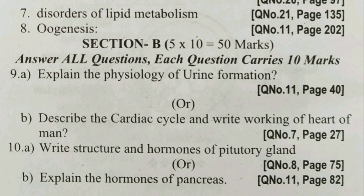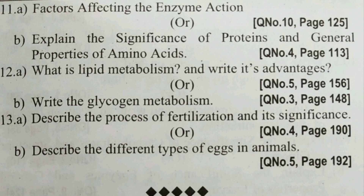Coming to Model Paper 1, Section B: Question 9A — explain the physiology of urine formation. Question 9B — describe the cardiac cycle and working of the heart of man. Question 10 — write the structure and hormones of the pituitary gland. Question 10 — explain the hormones of the pancreas. Question 11 — factors affecting enzyme action.